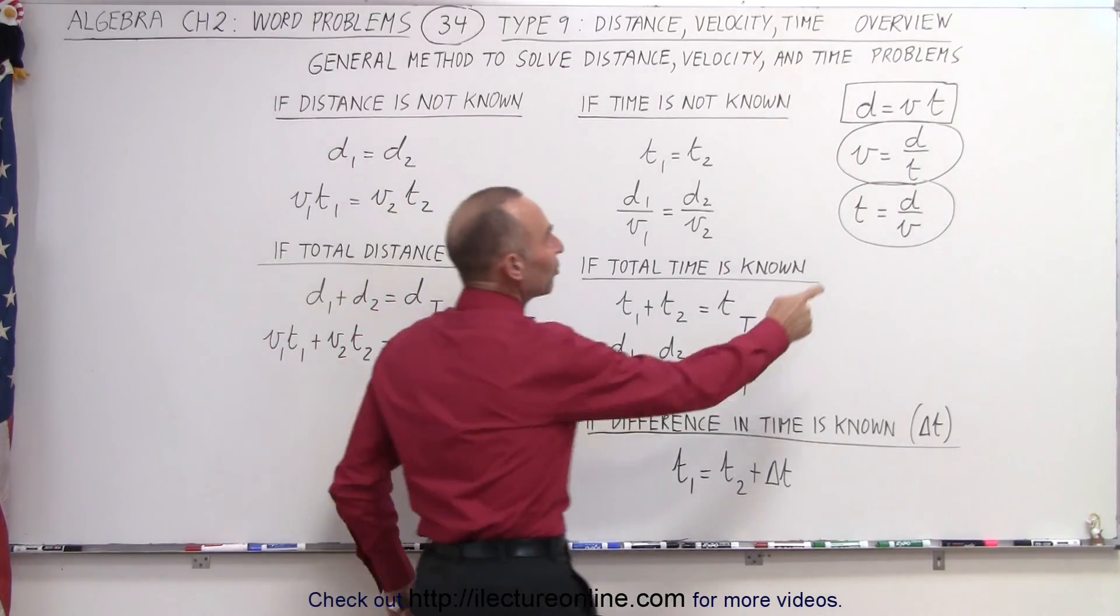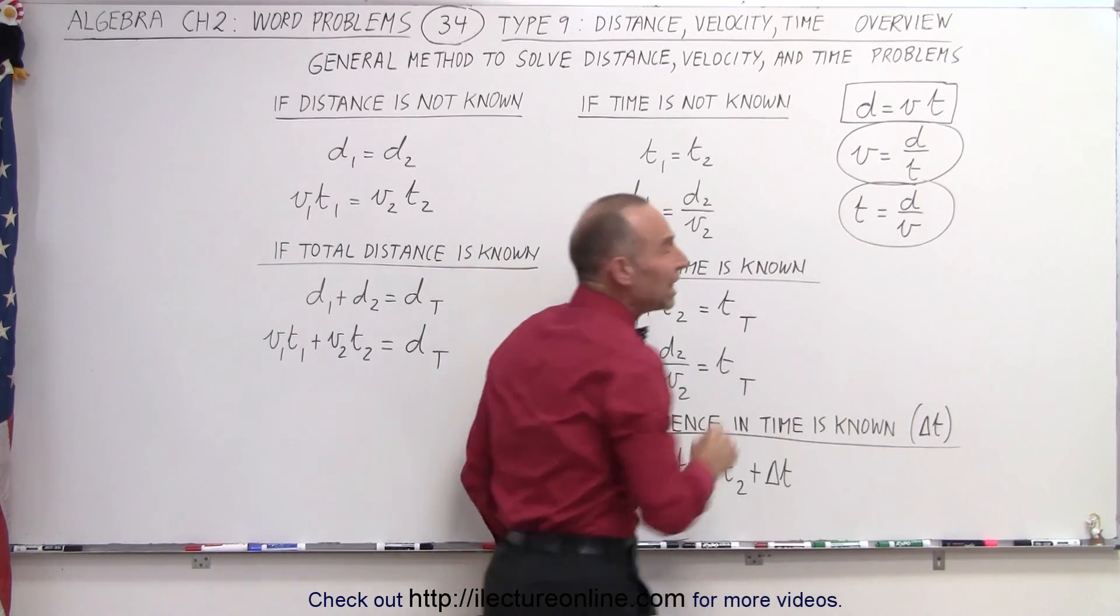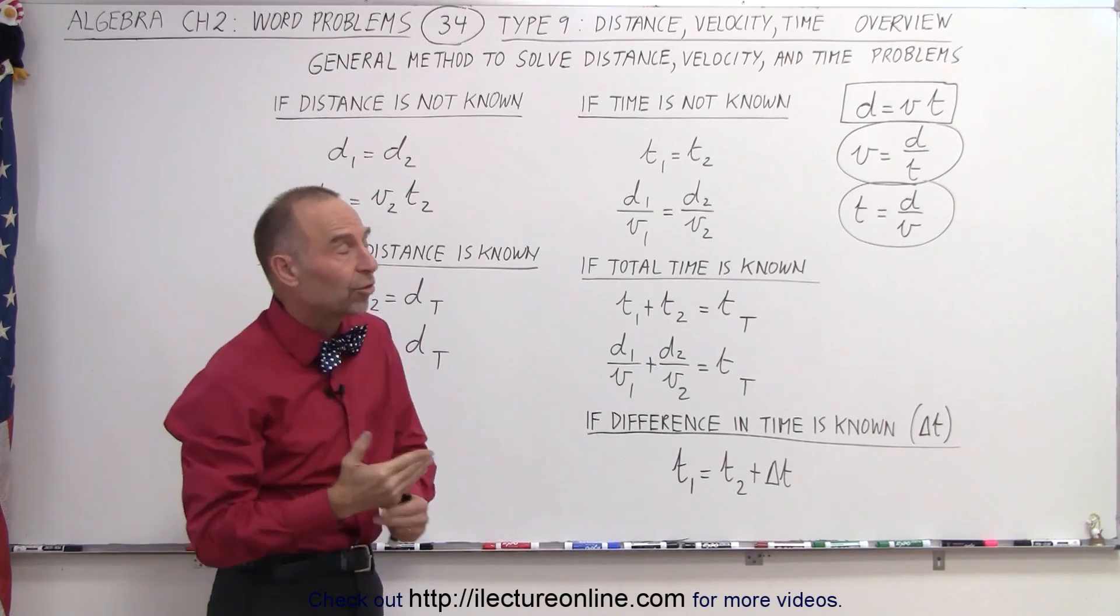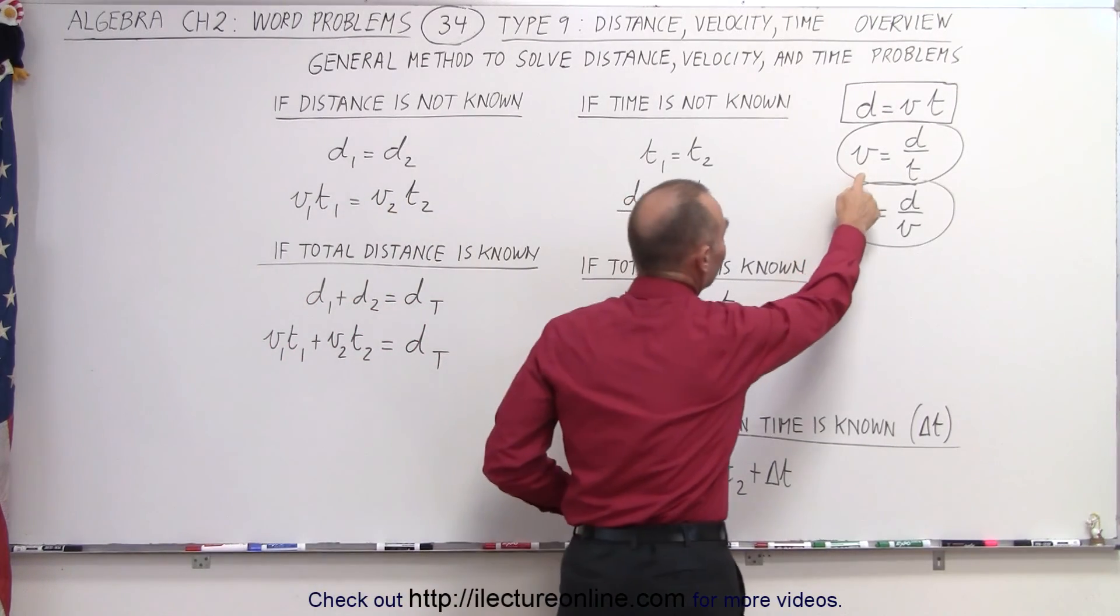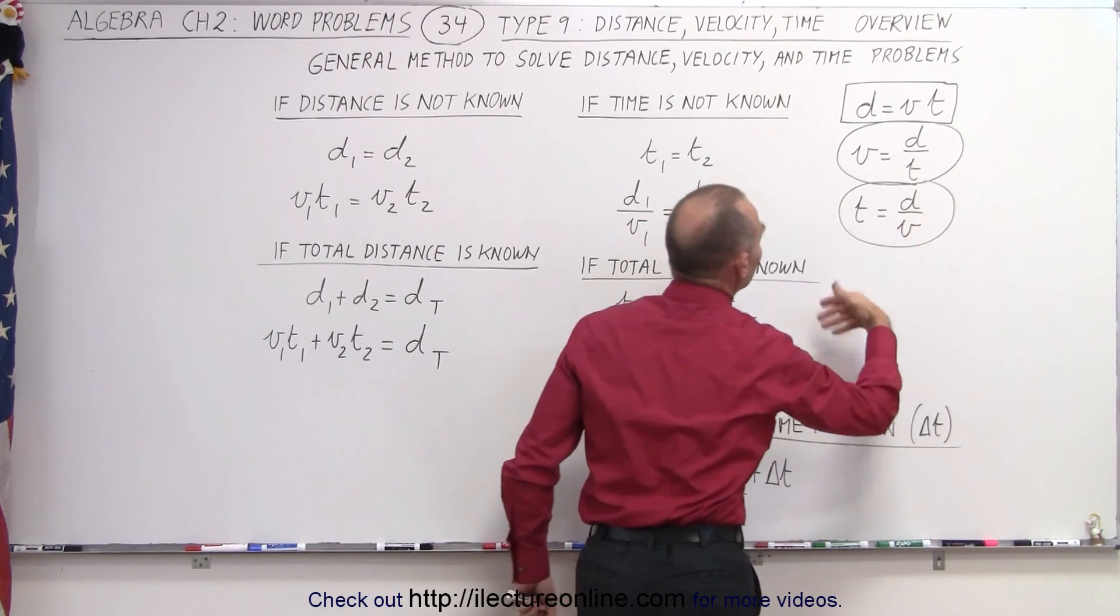We realize that the one equation that combines all three variables is the one that says that distance equals velocity times time, but notice that the very same equation can be solved for velocity, which then is distance over time, or time, which is equal to distance divided by velocity.